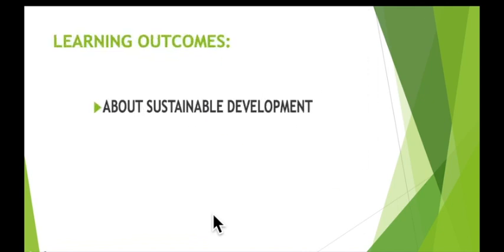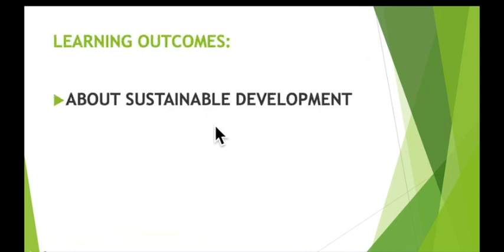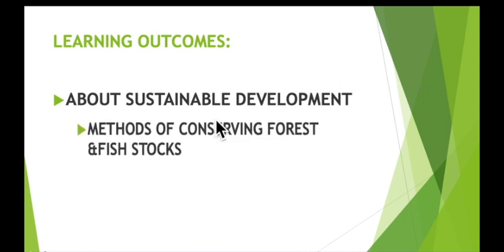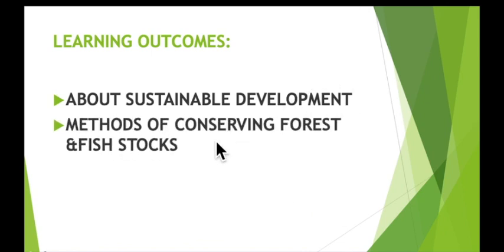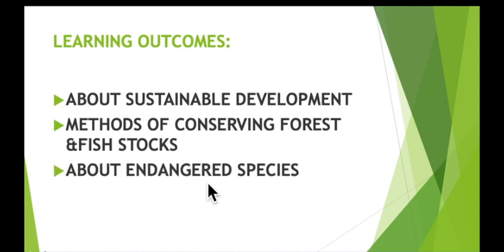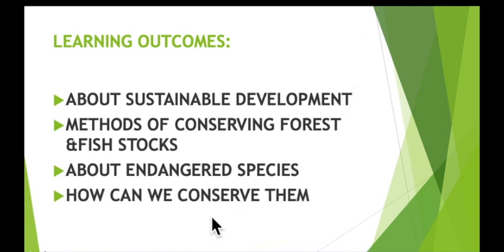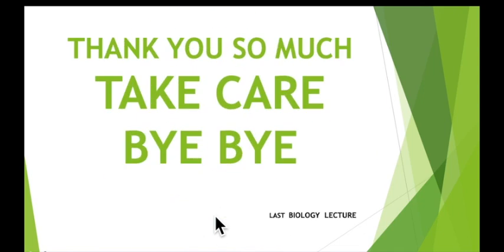At the end of this lecture, you should be able to understand sustainable development. We discussed methods of conserving forests and fish stocks, endangered species, and how we can conserve them. This is all about chapter number 22: Humans in the Environment. Thank you so much — take care, bye bye.